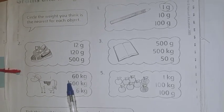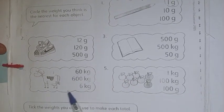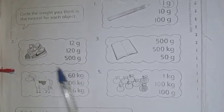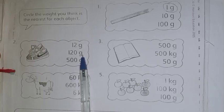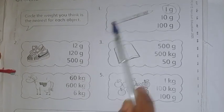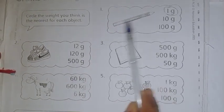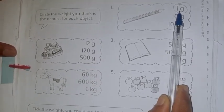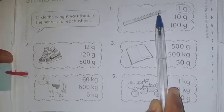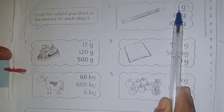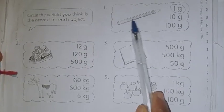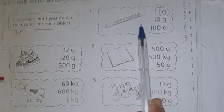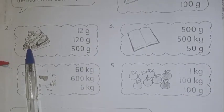Here the pictures of some objects are given. You have to estimate its weight and circle. One example is given here. Here you can see a pencil. We have three options here. You have to guess the weight of this pencil and circle it. That example is given here. The weight of this pencil is circled already. That is 1 gram.